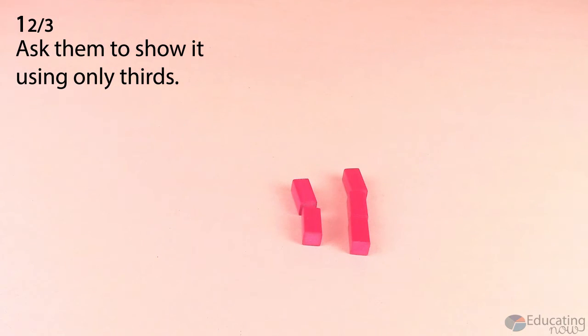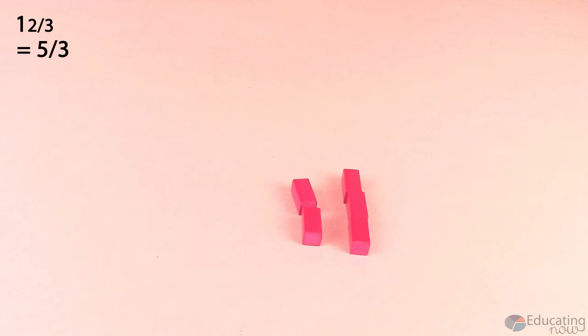So how many thirds are there in one whole and two thirds? Students can simply replace their whole with the three thirds. And they can now see that they have five thirds as their solution. So five thirds is the same as one whole and two thirds.